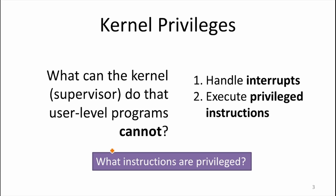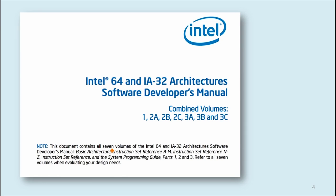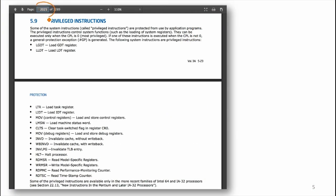How would you figure out what instructions are privileged on your processor? You could write a program — not in a high-level language, but a binary — that goes through all the opcodes and sees if you can run them. If it's a privileged instruction, a user-level program won't be allowed. The easier way is to look in the reference manual, or on Wikipedia. The Intel manuals are actually fairly readable and free online — a huge PDF with seven volumes — and if you read to about page 2025, it tells you all the privileged instructions.